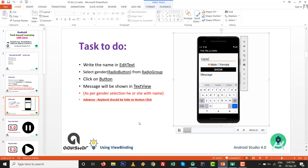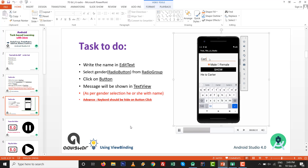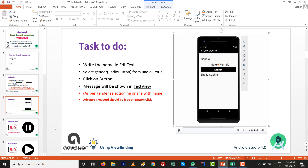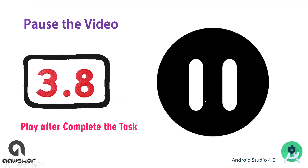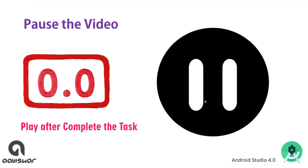For example, if you enter 'Carter' and by default Male is selected, then it shows 'He is Carter', and the keyboard will be hidden. Click on Female: 'She is Sophia', and keyboard will be off. So it's an easy task requiring a little bit of knowledge. Pause the video and do the practical yourself, then play after completion of the task.